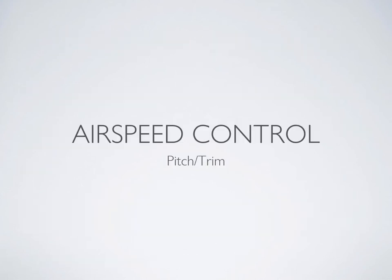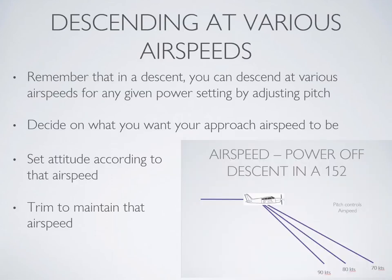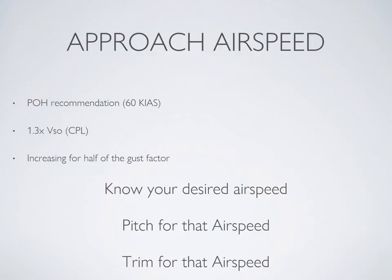Now let's talk about airspeed control. When you think airspeed control on final, think about pitch and trim. If you go back to the lesson on descending, remember that you start a descent by reducing power, then set the attitude according to the airspeed you desire, and then trim to maintain that airspeed. Power controls your descent profile, but it is predominantly your pitch that controls your airspeed. The approach speed is found in your aircraft operating handbook — in section 4, normal procedures — so look it up and verify it so that you can be confident in your answer.